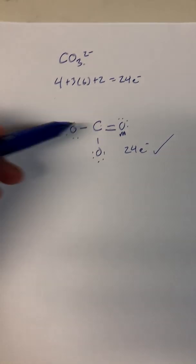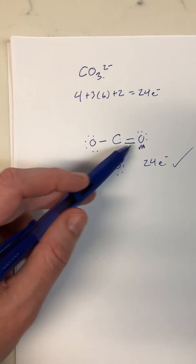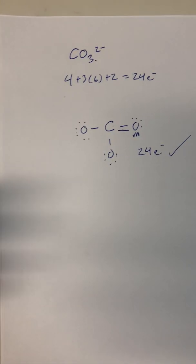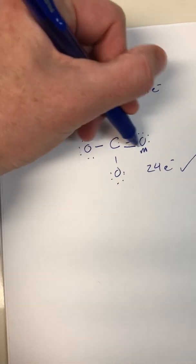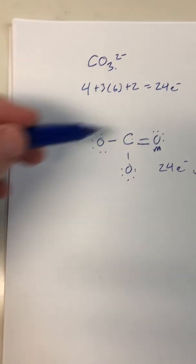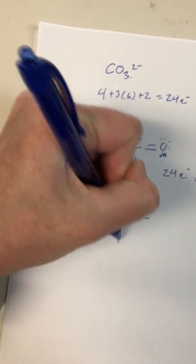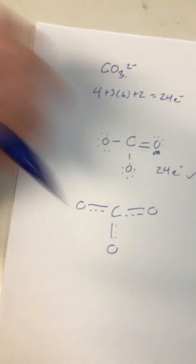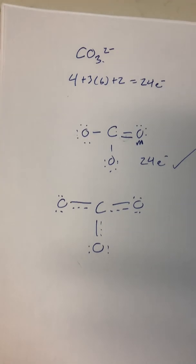But why would this oxygen be more favorable than this one or this one? How come we treat this oxygen differently than the other ones? The truth of the matter is we don't. Two of these electrons are actually delocalized — meaning they're not actually right there. They're moving around the structure to try to keep as many of these happy as possible. And that's exactly what we end up getting: one of these bonds is actually shared between three oxygens.